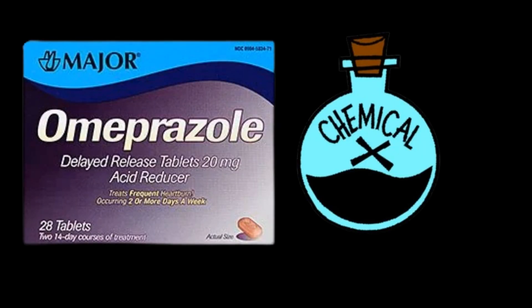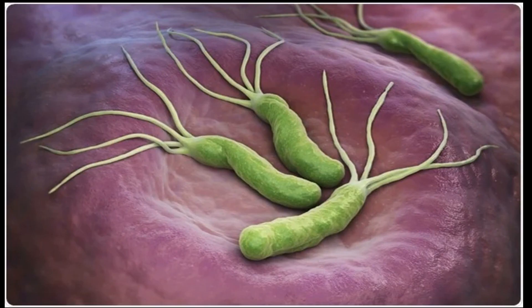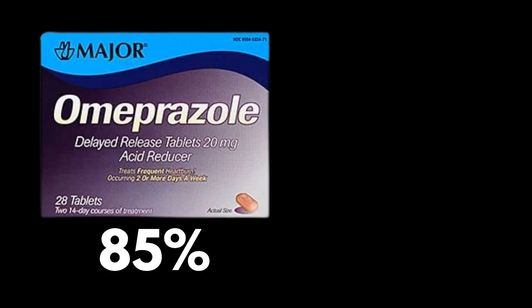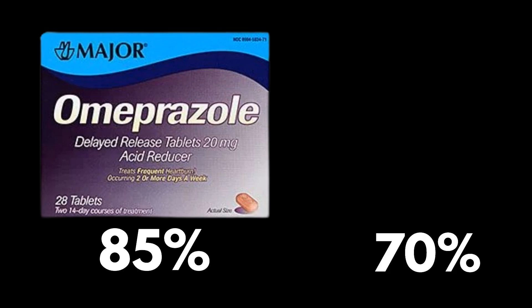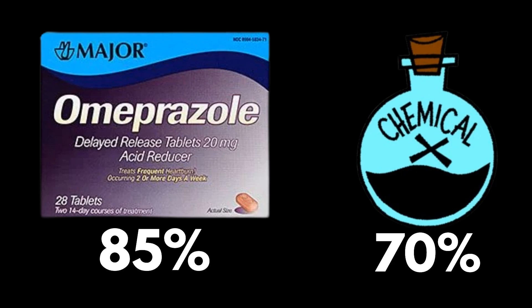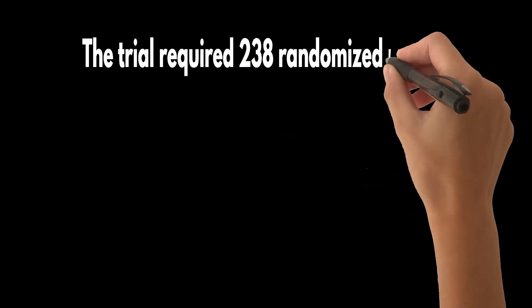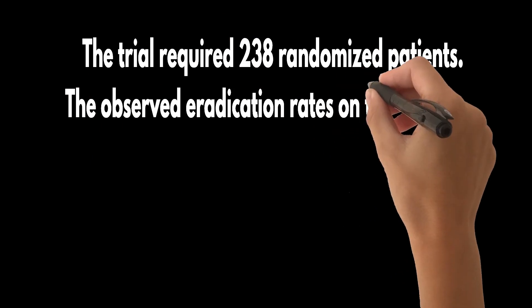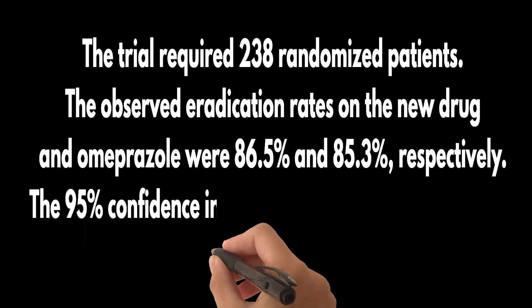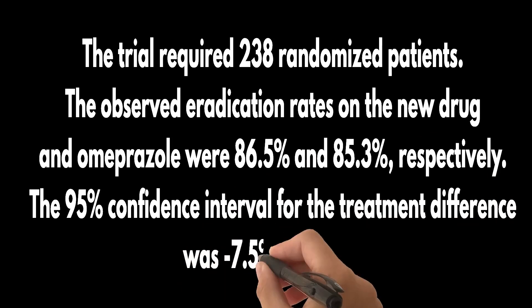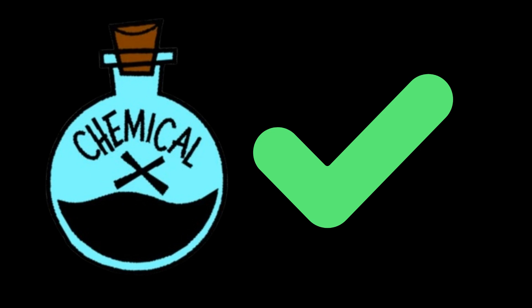Consider a non-inferiority trial comparing a new drug with omeprazole for treatment of Helicobacter pylori infection. The binary response is eradication of infection, yes or no. From past experience with omeprazole, an 85% eradication rate was anticipated. A non-inferiority margin was set at 15%, meaning the new drug would be regarded as non-inferior provided the possibility of its eradication rate being 15% worse than omeprazole could be ruled out. The trial required 238 randomized patients. The observed eradication rates on the new drug and omeprazole were 86.5% and 85.3% respectively. The 95% confidence interval for the treatment difference was −7.5% to +9.8%. A difference of −15% is clearly ruled out, and on that basis the new drug was considered non-inferior to omeprazole.